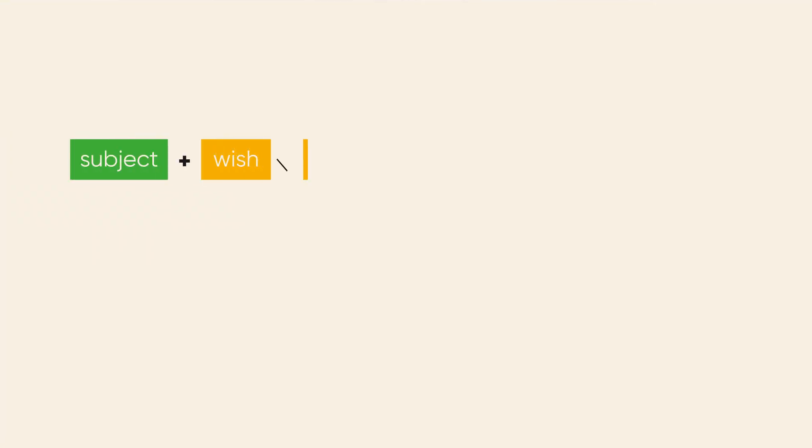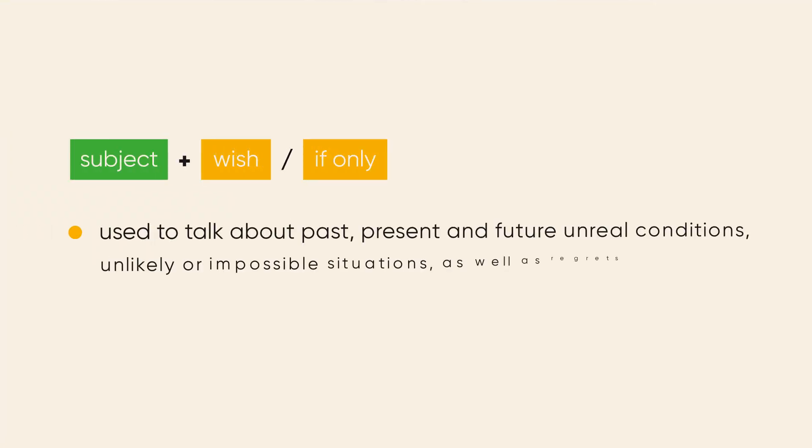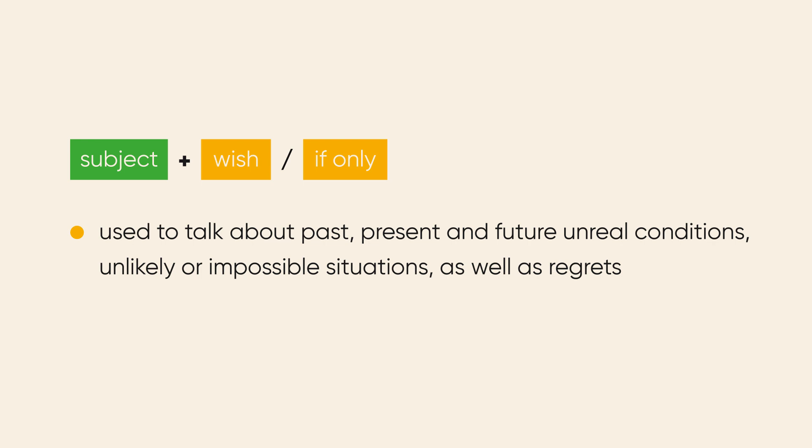Hello there! Have you ever wanted to change your past? To go to bed earlier last night or spend more time with family and friends during the summer holidays? Or maybe you'd like to change something in your life at present? In English there are constructions — subject plus wish and if only — we use them to talk about past, present and future unreal conditions, unlikely or impossible situations, as well as regrets, things that we would like to change.